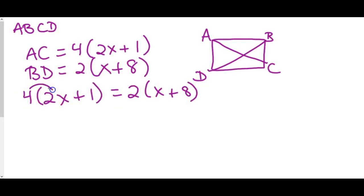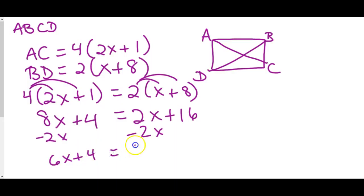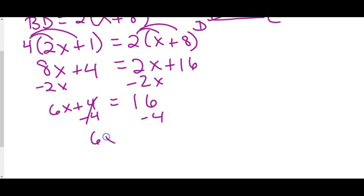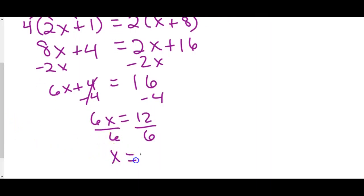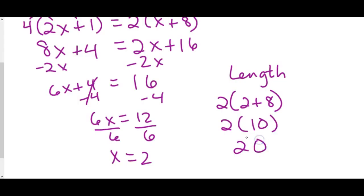Since there are parentheses, we distribute first: 4 times 2x is 8x, 4 times 1 is 4, 2 times x is 2x, 2 times 8 is 16. Subtract 2x from both sides, subtract 4 from both sides, then divide by 6 — so x equals 2. If they want the length, plug in: 2 times the quantity x plus 8 becomes 2 times 10, which equals 20.